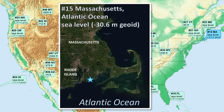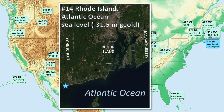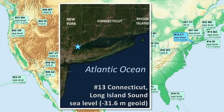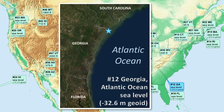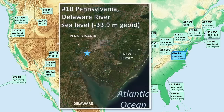Number 15 is Massachusetts. Number 14 is Rhode Island. Number 13 is Connecticut, with its low point on Long Island Sound. Number 12 is Georgia. Number 11 is New York. Number 10 is Pennsylvania, with the low point on the Delaware River, but still at sea level.